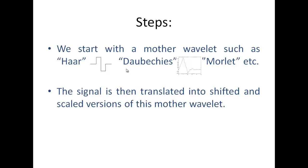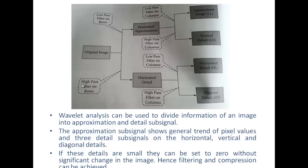The signal is then translated and shifted into scaled versions of this mother wavelet. Suppose I have an original image — I apply the low pass filter and the high pass filter on the rows. Since I am applying the wavelet transform in both dimensions, I first apply on the rows and then the columns. The low pass filter preserves low frequencies and the high pass filter preserves high frequency components. Whenever I apply a high pass filter, I get the details, and whenever I apply the low pass filter, I get an approximation value.